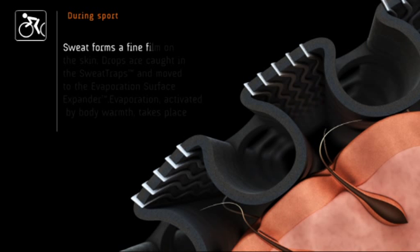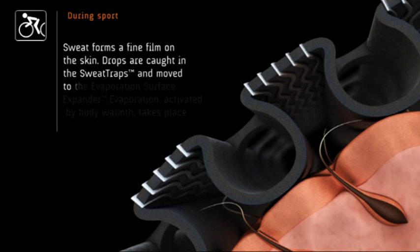During sport, sweat forms a fine film on the skin. Drops are caught in the sweat traps and move to the evaporation surface expander.